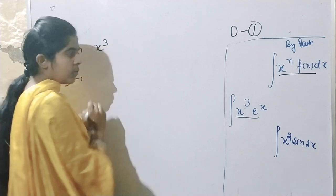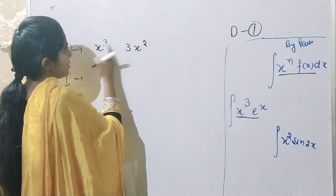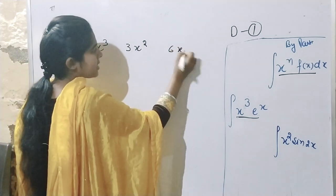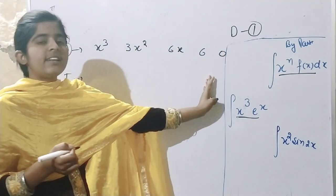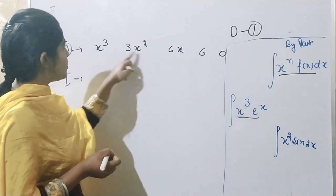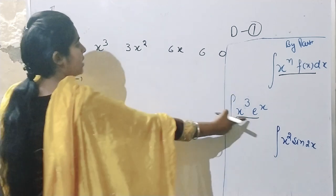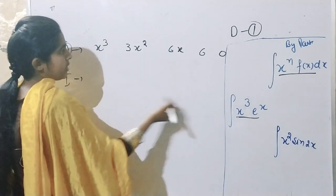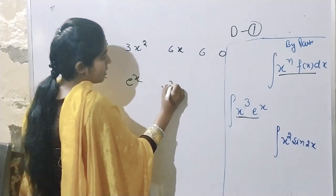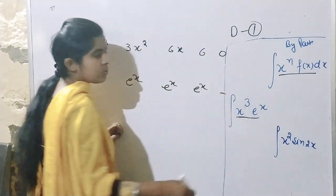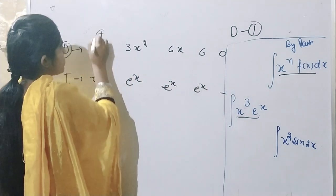For example, take x cubed times e to the x. Here the derivative of x cubed is 3x squared. Then 6x, then 6, then ultimately 0. For the integration column: e to x, e to x, e to x, e to x.